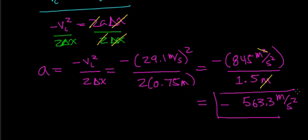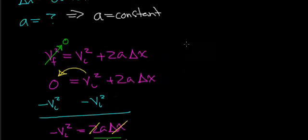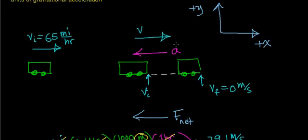Notice the acceleration is very large, and also notice the sign of the acceleration. In this case, you have a negative acceleration, which means the object's velocity is changing in the opposite direction it is initially traveling. So we expect to find an acceleration with a negative number, because the acceleration was in the opposite direction of the initial velocity.